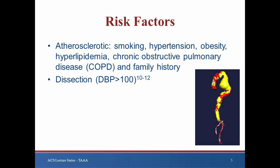Aortic dissection is another risk factor for development of TAAAs, with up to 40% of patients with chronic dissection eventually requiring repair. Hypertension, specifically diastolic blood pressure greater than 100 mmHg, seems to be the most consistent risk factor associated with dissection progressing to aneurysm formation.